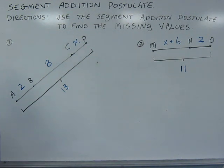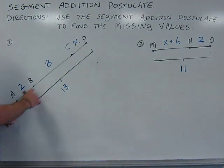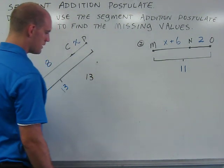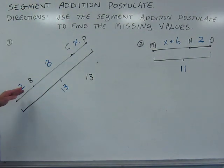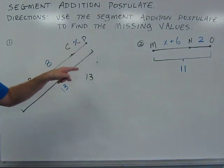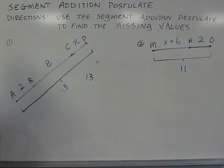In the first example, it gives us that segment AD has a length of 13. So, everything that we add together from the top must be equal to 13, the length of the entire segment.